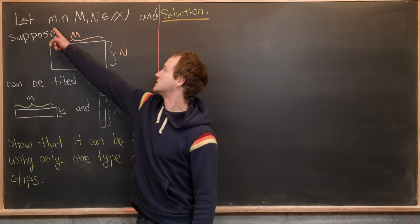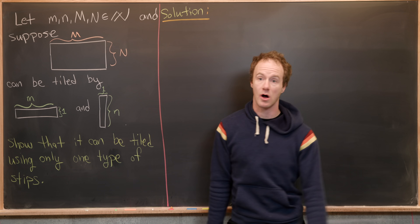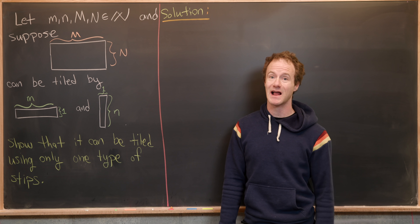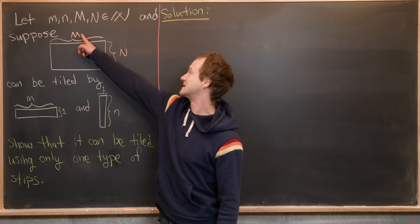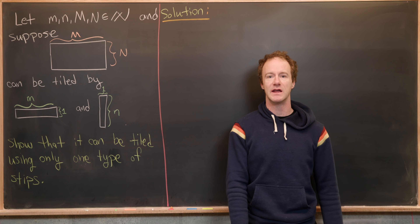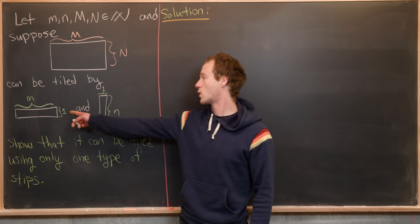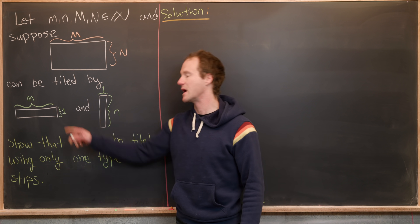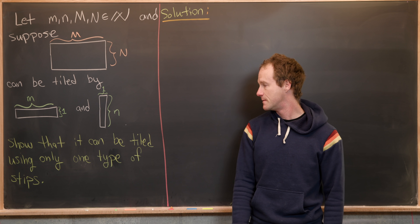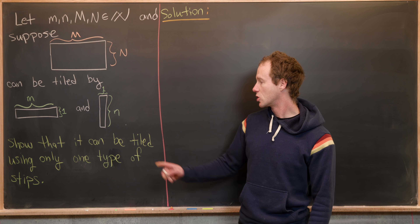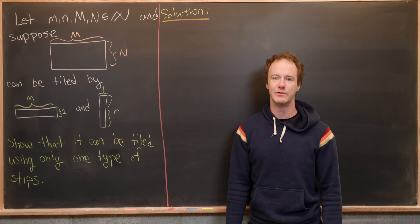Let's suppose little m, little n, capital M, capital N are all natural numbers — that is, positive integers. We have a capital M by capital N rectangle, and it can be tiled using a combination of horizontal strips, which are m by 1, and vertical strips, which are 1 by m. Our goal is to show that we only need one type of these strips.